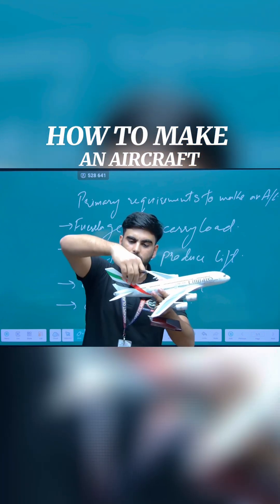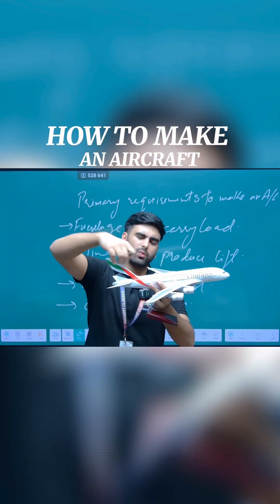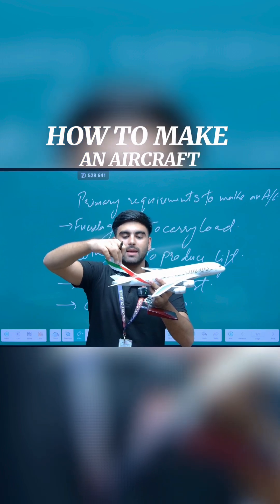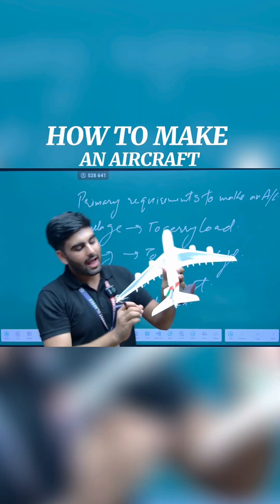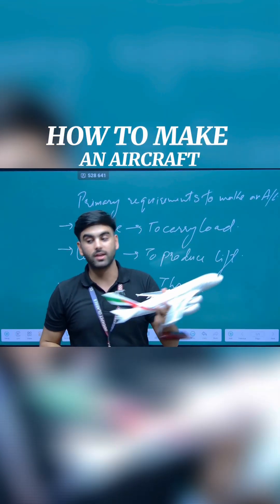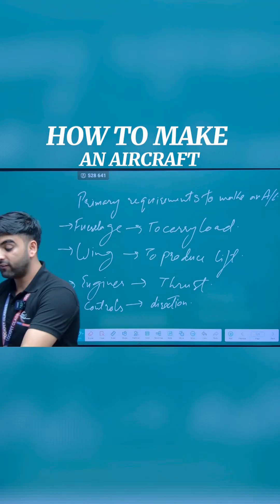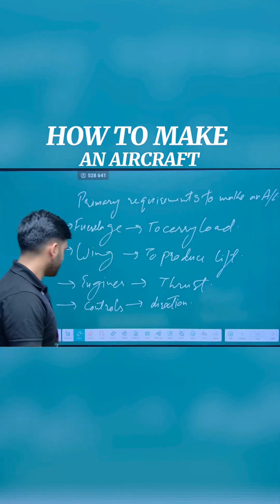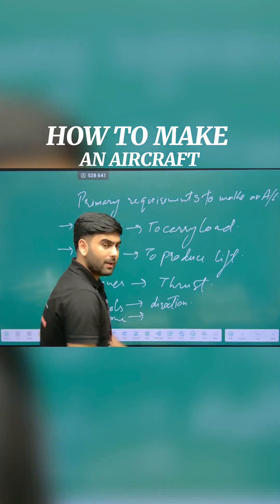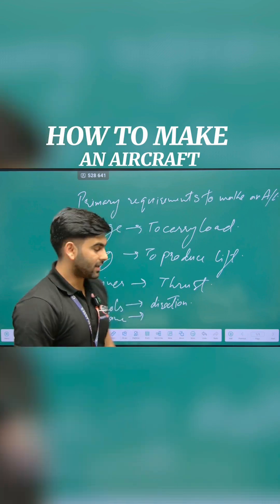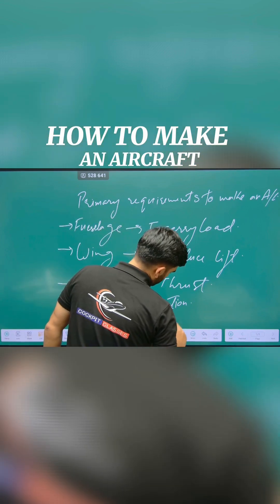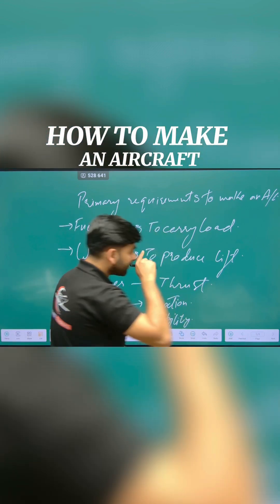If you see this, the vertical — this is known as the vertical stabilizer. And this is known as the horizontal stabilizer. So the fifth part is the tail plane, and the tail plane works to give stability.